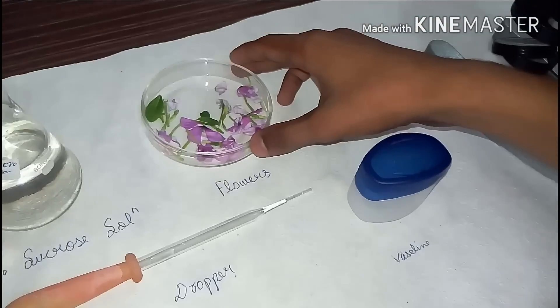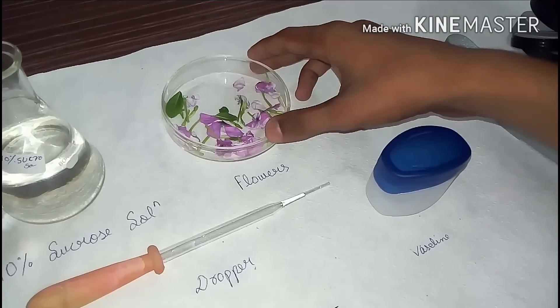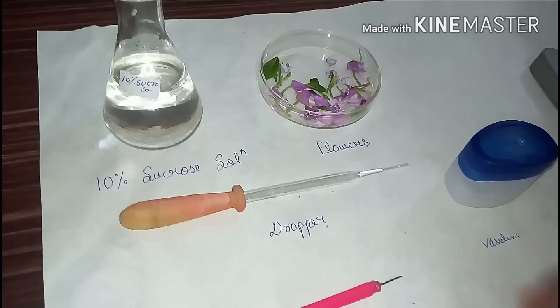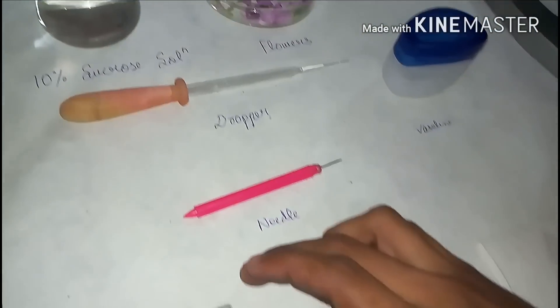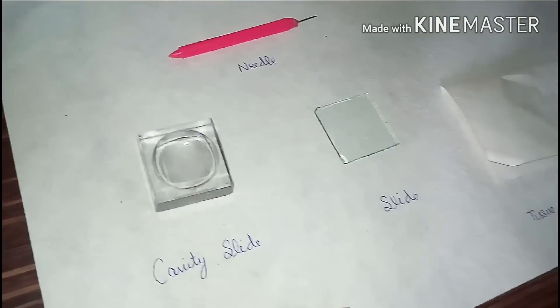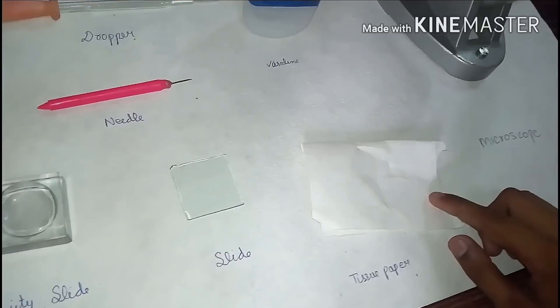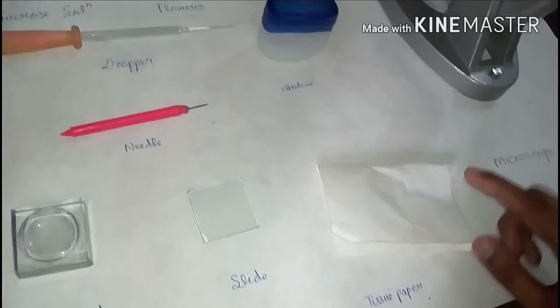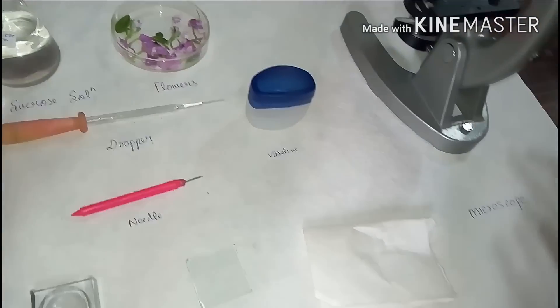We need flowers of Sada Bahar for pollen grains, a dropper, a needle, a cavity slide, a slide, tissue paper to clean all the apparatus, vaseline, and a microscope.